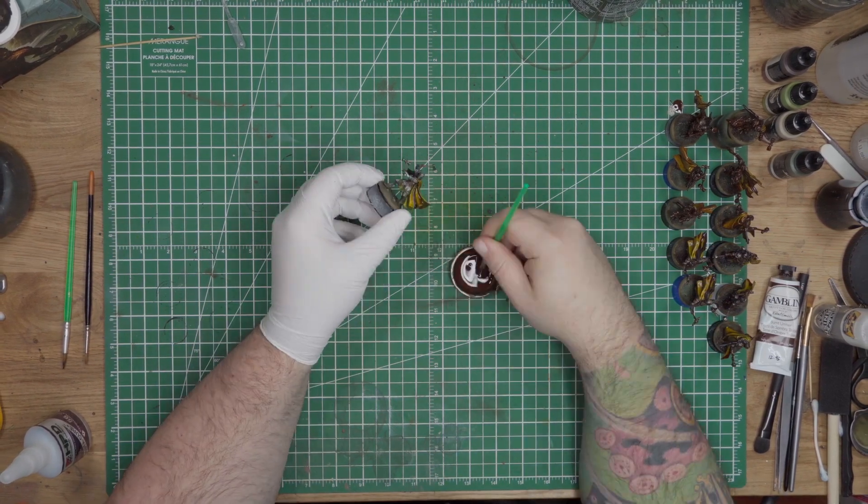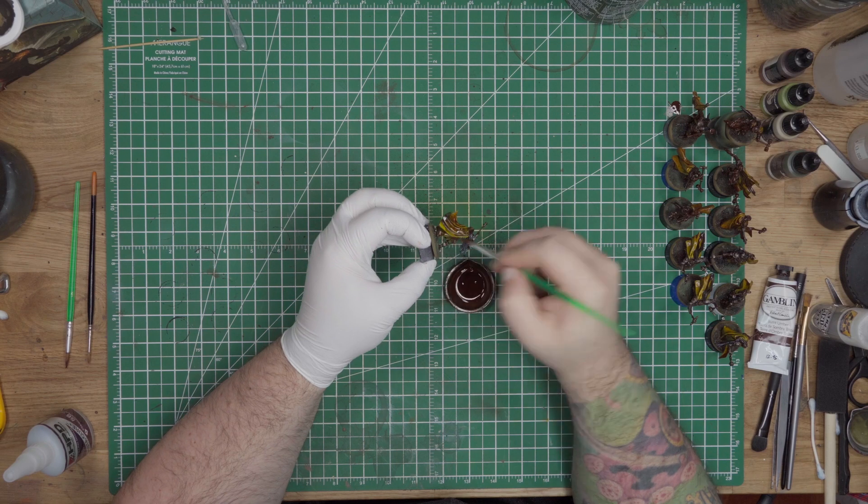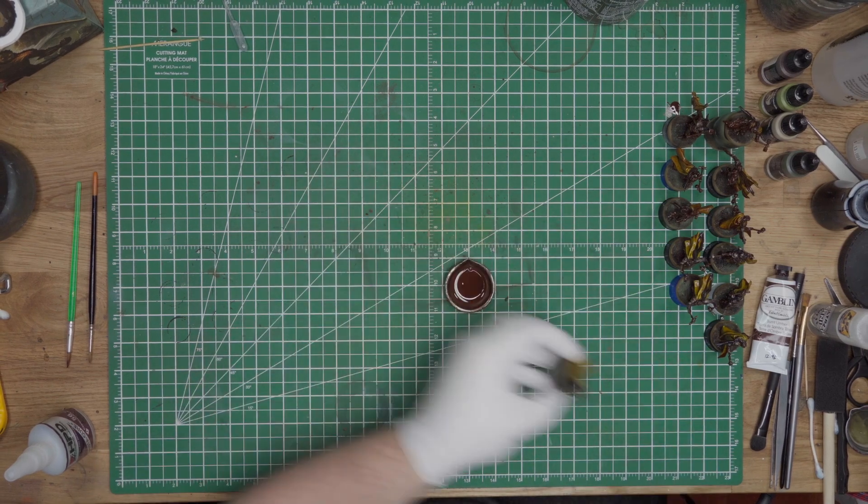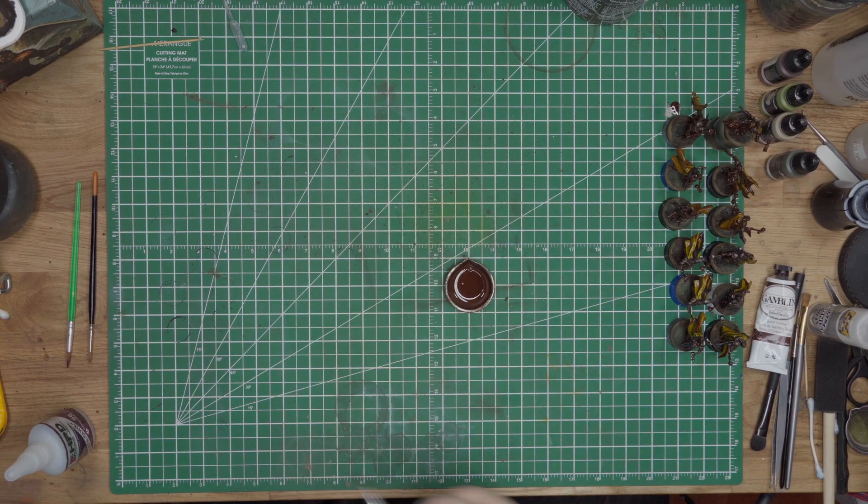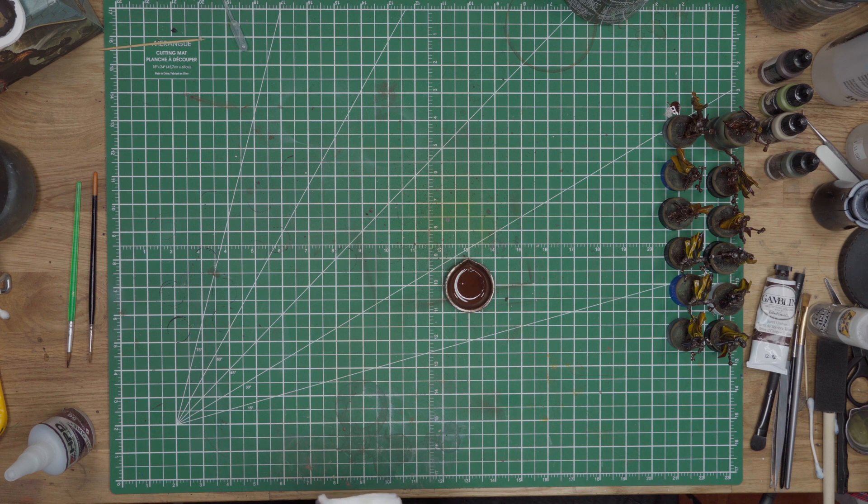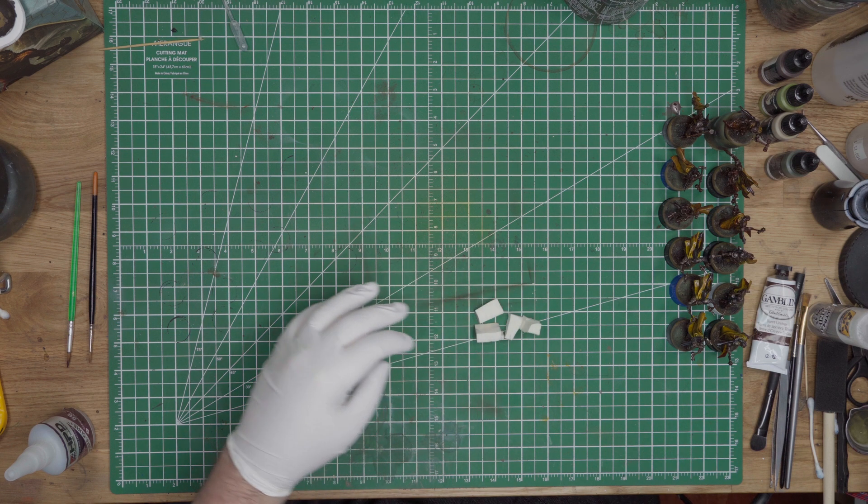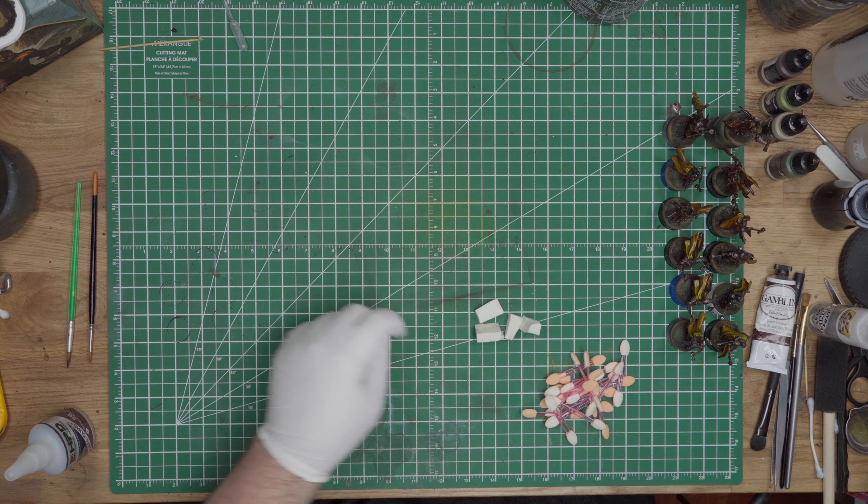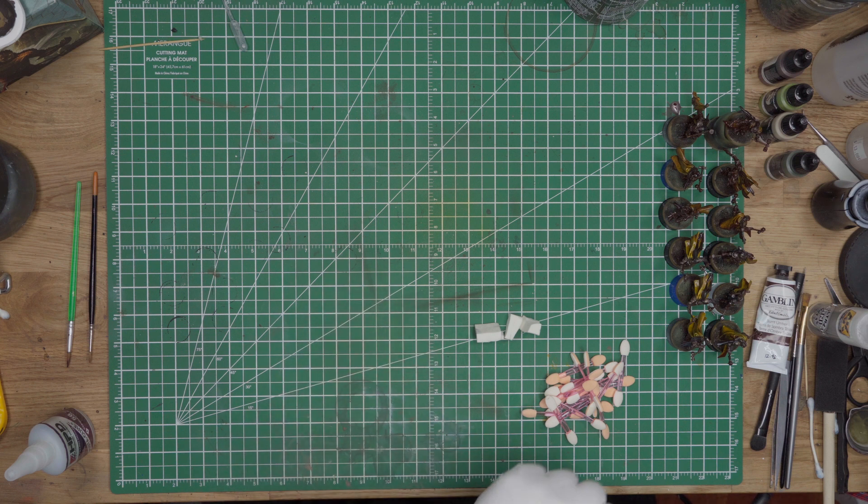Once all your models are good and slathered in oil paint and white spirit, you need to set those aside and don't touch them for a while. How long is kind of up to you, but a general guideline is about 20 minutes. So take your dog for a walk, grab a coffee, drink a beer, do whatever it is you do that takes 20 minutes of your time before you come back to clean everything up.